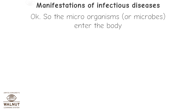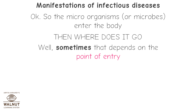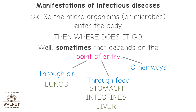Once microorganisms or microbes enter the body, where do they go? Sometimes it depends on the point of entry. If the microbe enters through air, it goes to the lungs. If it enters through food, it goes to the stomach, intestines, and liver. If it enters through other ways, it goes to other organs.